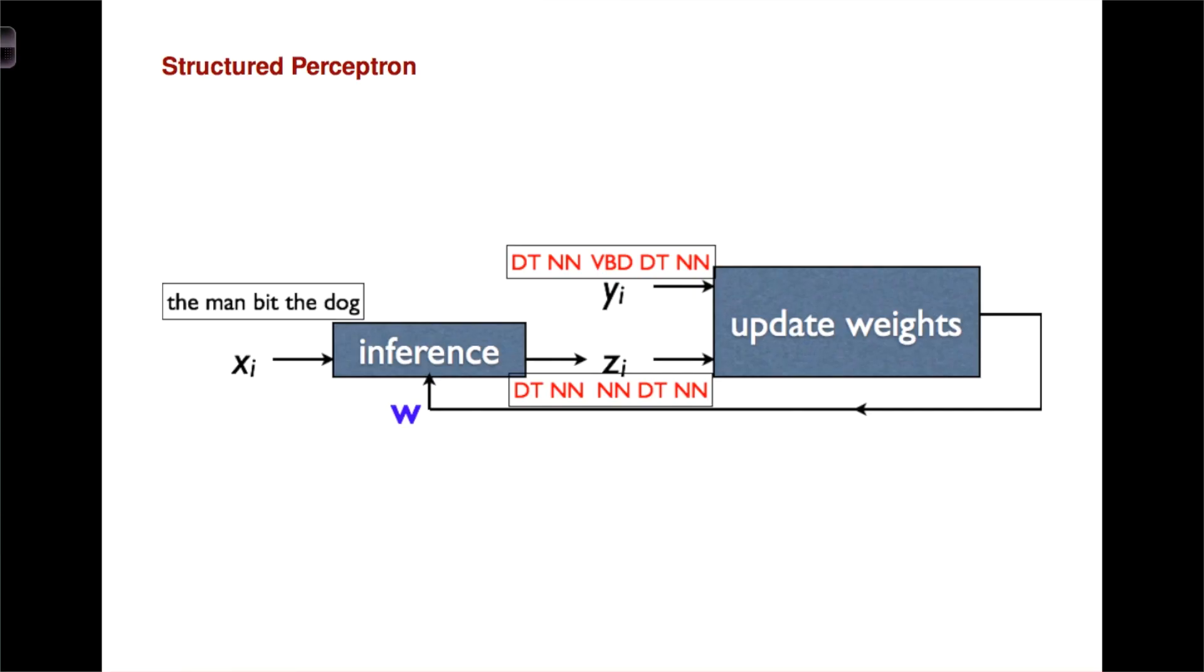So now let's talk about the structured perceptron. Now that you understand how the regular perceptron works, things get a little bit more complicated. Now we have a sequence coming in and we need to label that sequence. We need to update the weights where we make a mistake. But here our mistakes are part of a sequence. So how do we know which features to punish when we make a mistake?